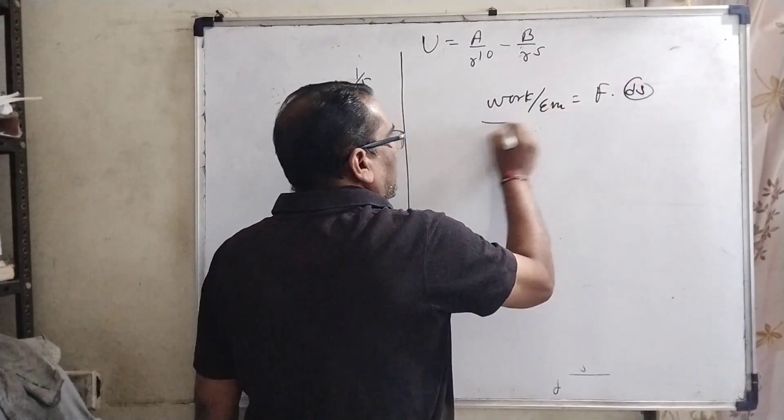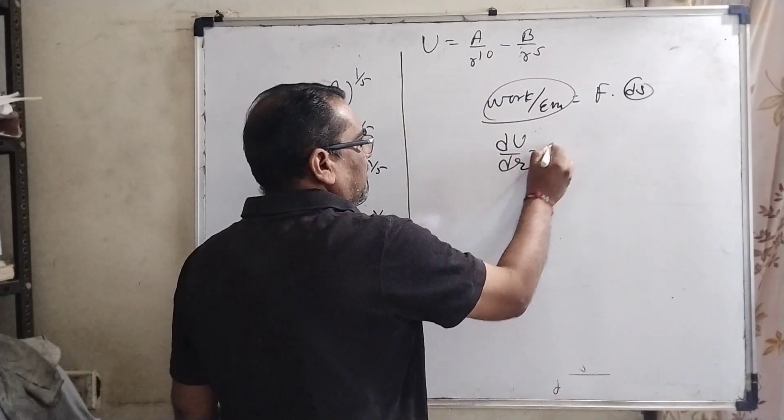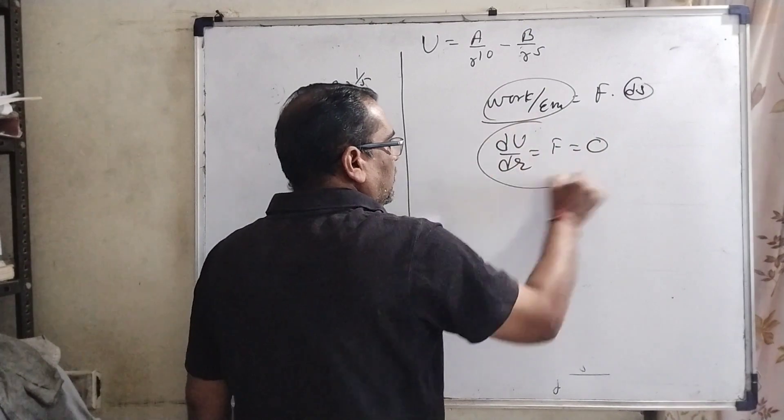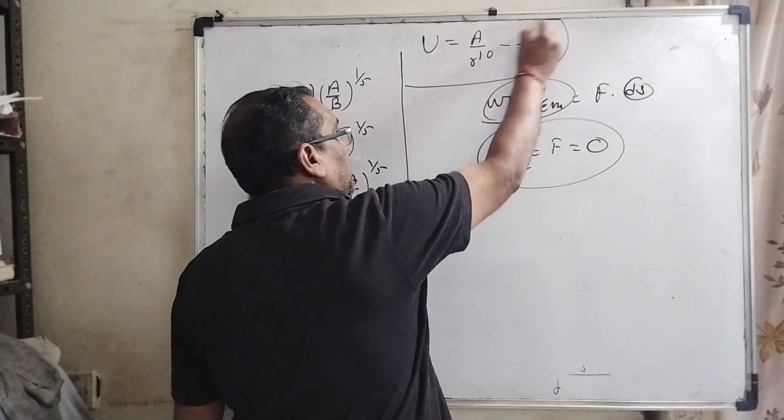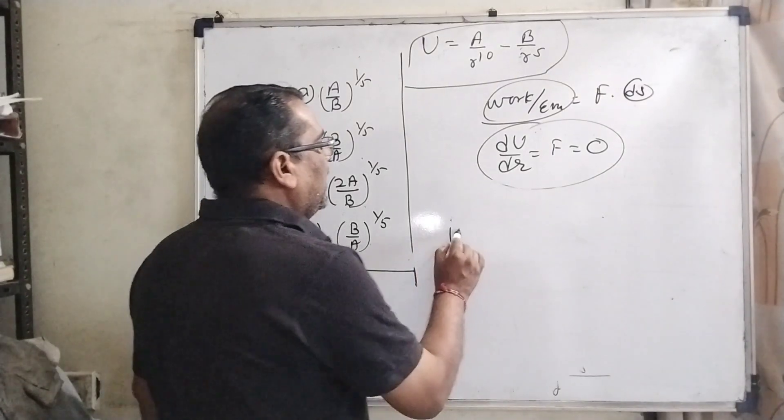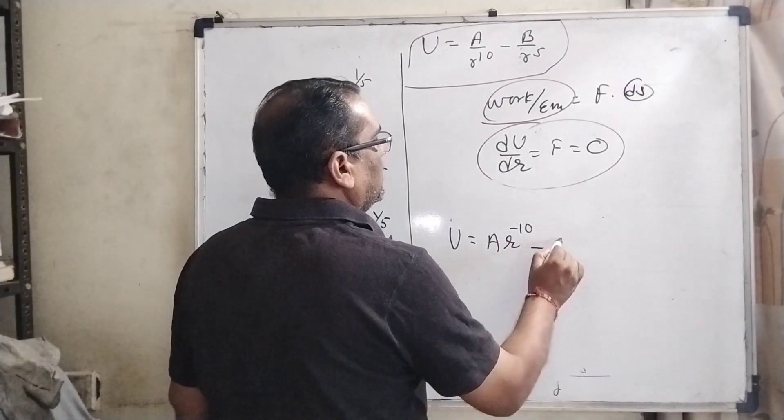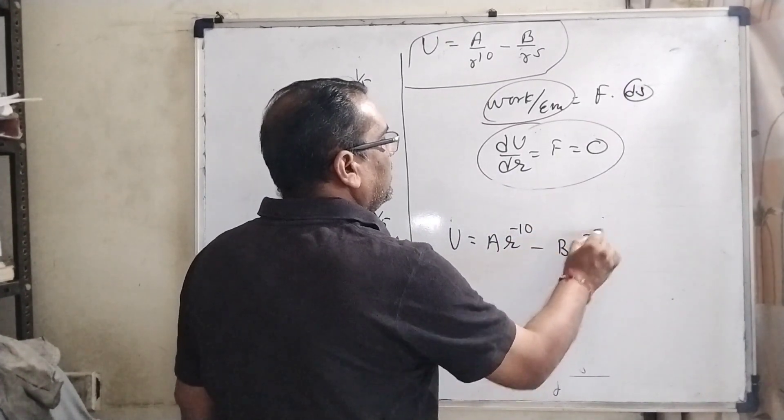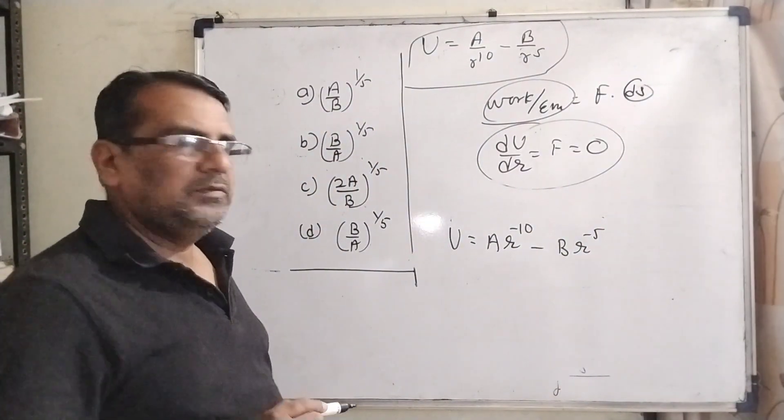So now, here work and energy means dU by dr is equal to force, and there is no any force will be applied, equal to 0. So let us first we have to differentiate with respect to r. So now U can be written as A r raised to power minus 10 minus B r raised to power minus 5. Then differentiate with respect to r.